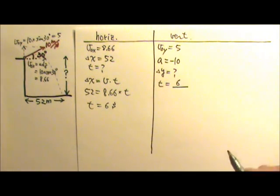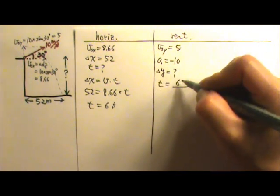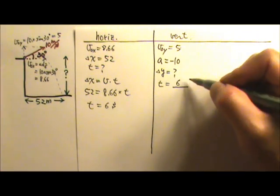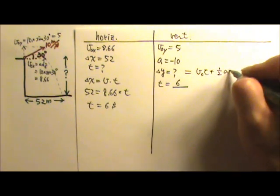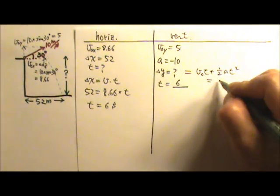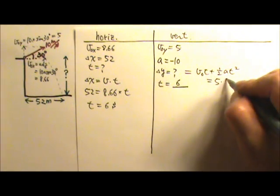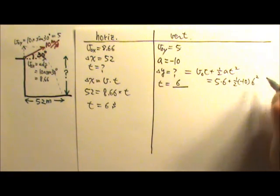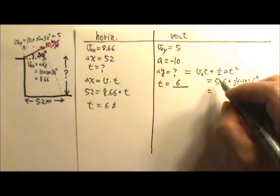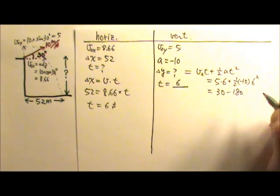So we use it over here. We know these three things, no final velocity involved. So this equation can be convenient. So this is 5 times 6 plus 1 half AT squared.